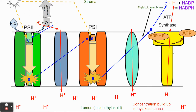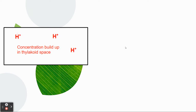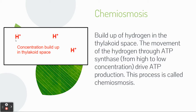Photolysis starts the whole process of the electron transport chain — because we have an electron, it's being transported down a chain. Now there's another really important definition you need to know. This buildup of hydrogen concentration is called chemiosmosis. Chemiosmosis is the buildup of hydrogen in the thylakoid space, and as hydrogen moves through ATP synthase from high to low concentration, it drives ATP production. You need to know this definition — the concentration buildup in the thylakoid space drives the production of ATP.